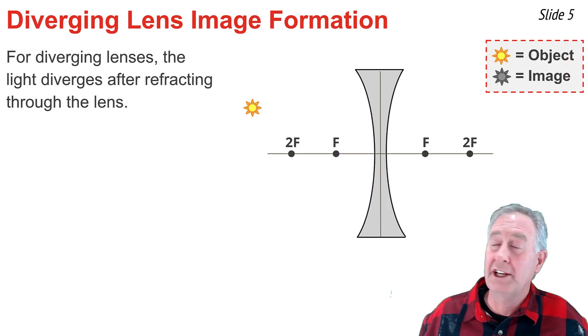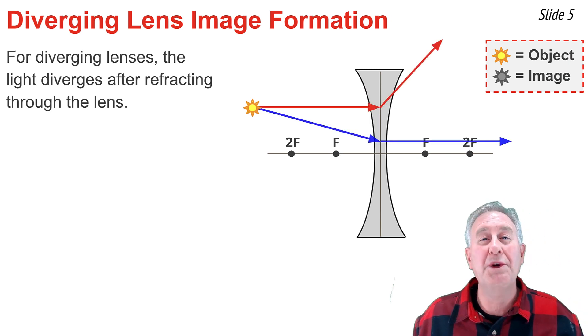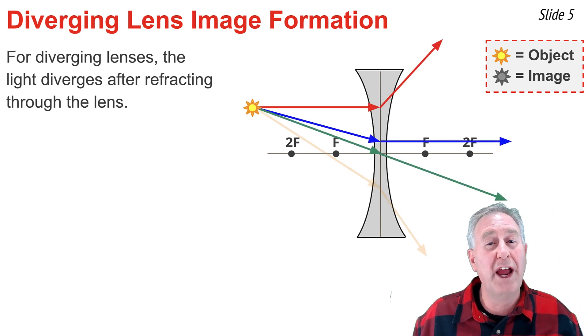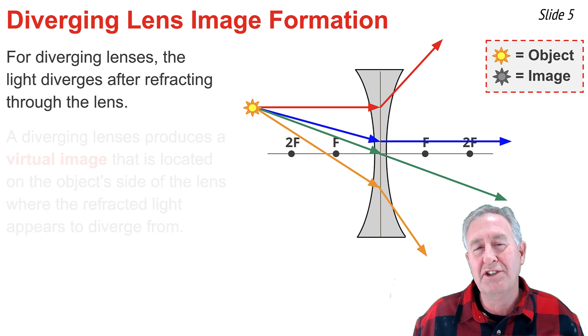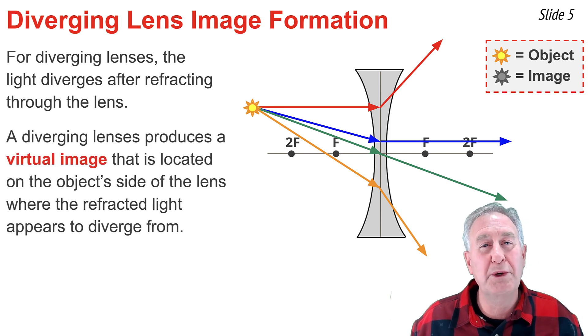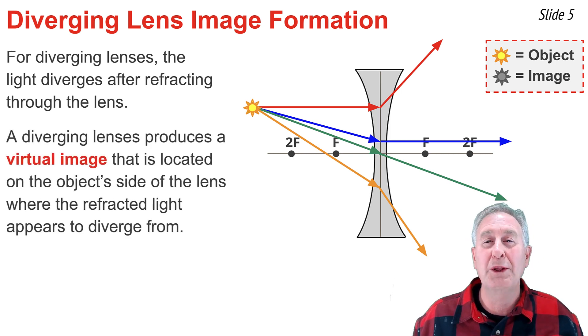For a diverging lens like this one, light always diverges after refracting through the lens. Thus, a diverging lens will always produce a virtual image located on the object side of the lens where the refracted light appears to come from.